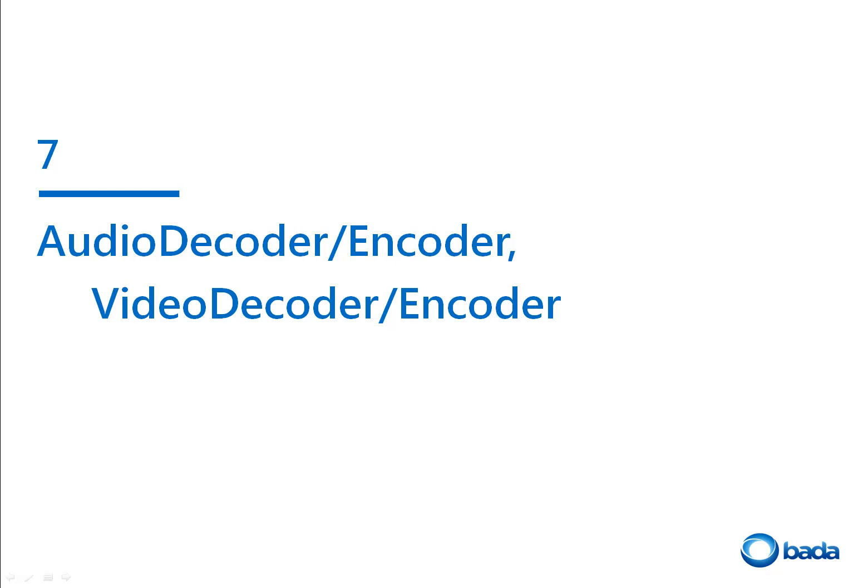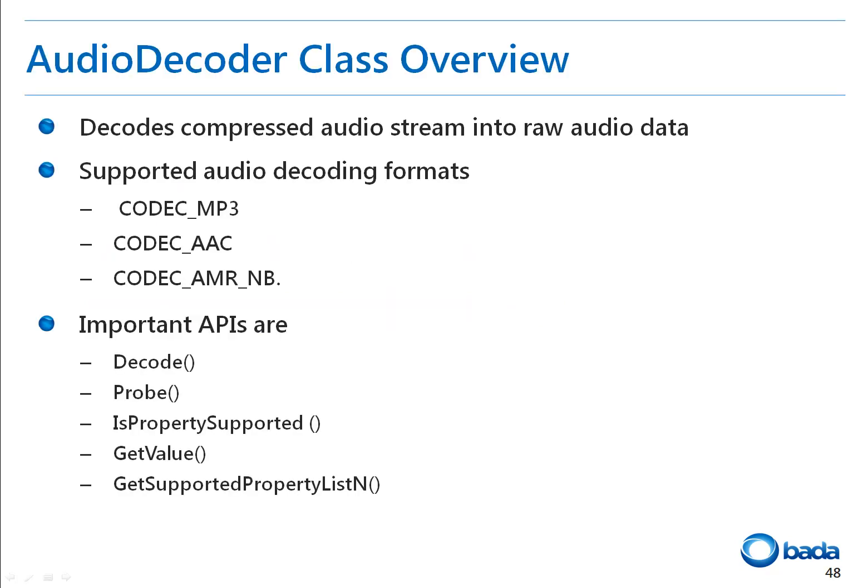The audio-video encoder-decoder facilitates the conversion of raw data to compressed data and vice versa. The audio decoder class provides an API to decode compressed audio streams such as MP3, AAC, and AMR to raw PCM data. All APIs of the audio decoder class are asynchronous. The source data for AAC and AMR decoder must be raw compressed data without a header. The Probe API queries stream properties such as sample type, channel type, and sample rate. The Decode API decodes audio data from the source buffer and stores it in a destination buffer.